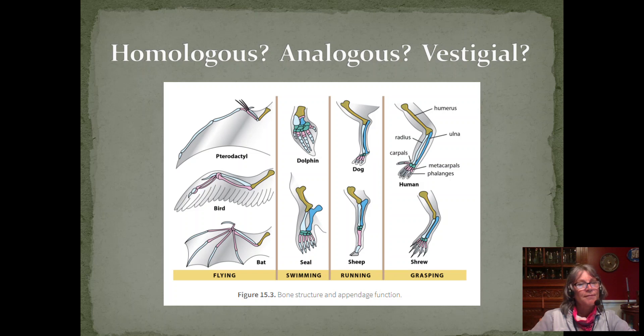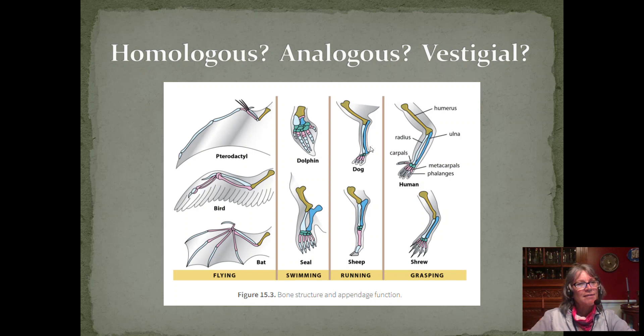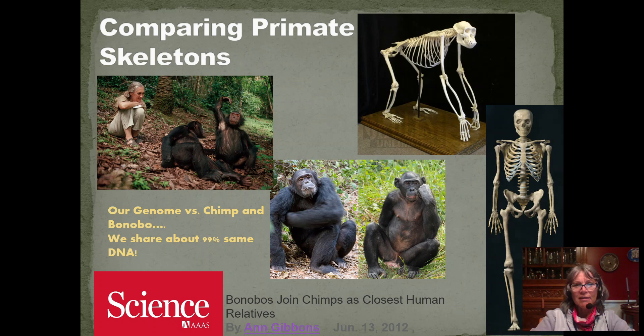Here's an example — is this a homologous, analogous, or vestigial structure? There are different uses: flying, swimming, running, grasping — different shapes and different uses. But the bone structure is the same. I have the same bones, slightly modified depending on the bone. If I count those bones, I have the same bones across the board. So those are homologous structures.